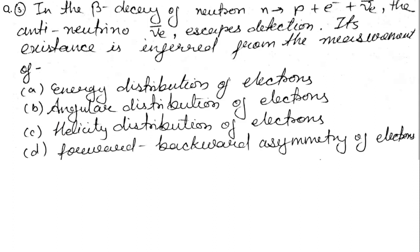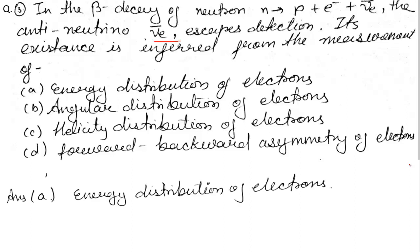Question 3: In the beta decay of neutron (n → p + e− + anti-neutrino), the anti-neutrino escapes detection; its existence is inferred from the measurement of — we need to identify which option is correct. Option A says energy distribution of electrons. The answer is straightforward: we can determine the energy distribution of electrons in the entire reaction, and according to energy we will know whether we got an anti-neutrino or not. The answer is energy distribution of electrons.